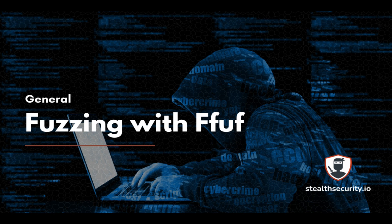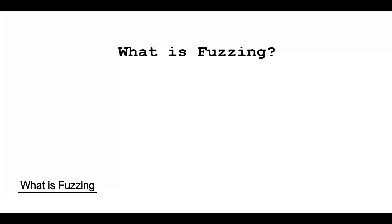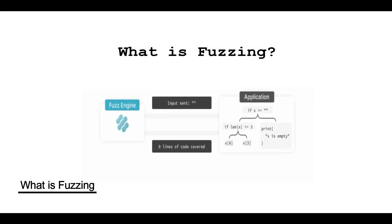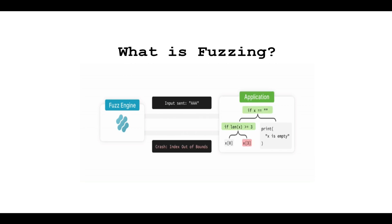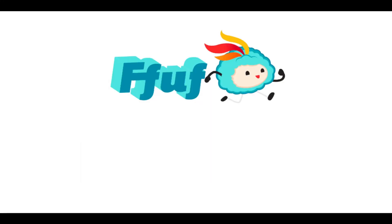First, let's define what fuzzing is. Fuzzing in general is a technique for finding vulnerabilities in software. We do this by providing unexpected or twisted input to the program. A simple example would be to generate a list of random file names and use fuzzing to see if they exist on the website. Another example would be to fuzz a login form with random inputs to see if we can crash the web application. FFUF is a tool that automates the process of fuzzing.